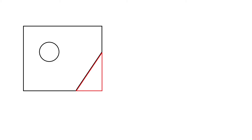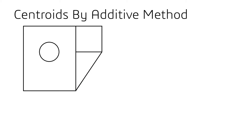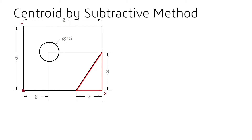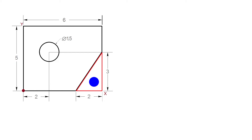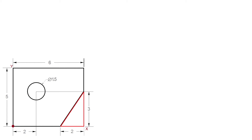Typically you want to do it in as few steps as possible. If you do this by additive means, you could break it up like this — that involves calculating one, two, three, four different things. Using the subtractive method, we only need to calculate three things: the entire rectangle, this hole here, and this piece that was chopped off. The center of any rectangle is right in the middle. The center of a circle is right in the middle. A triangle is a little bit weird, but its centroid from this base is one third of its height up from its base. So the centroid of our triangle is right there.